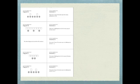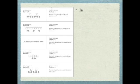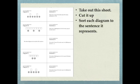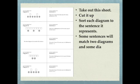You have been given a sheet with some diagrams and some sentences on them regarding spaghetti sauce. I need you to take that sheet out, cut out all the cards individually, and sort them so that each sentence matches a diagram. Now some sentences will match two diagrams, and some sentences will match one diagram, and some don't match anything. This is an exercise for you to start understanding how diagrams work. So that's it for this video.